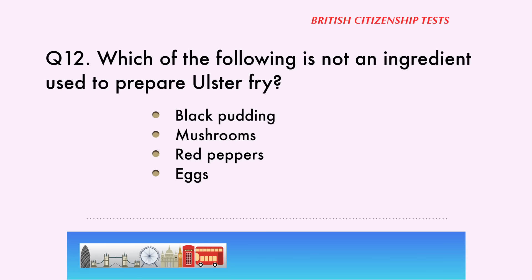Question 12. Which of the following is not an ingredient used to prepare Ulster Fry? Black pudding, mushrooms, red peppers, eggs. The correct answer is... Red peppers.